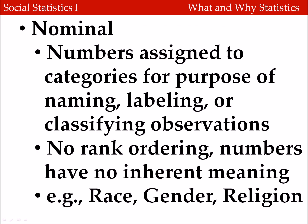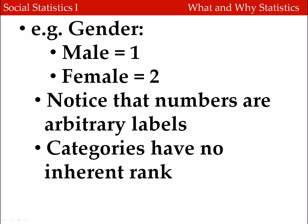Let's start with the lowest level of measurement: nominal variables. Here, we assign numbers to the categories of variables using numbers that are basically just labels — they have no rank ordering and no inherent meaning in the context of the variable. Examples include things like race, gender, or religion. For instance, gender takes on one of two values — male or female — and we can arbitrarily choose the numbers one and two to refer to males and females. The numbers are just arbitrary labels with no rank ordering; I could use any numbers and it wouldn't matter.